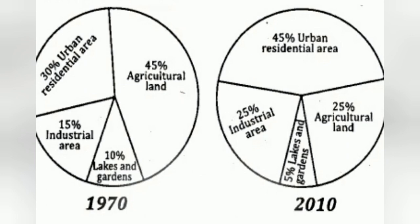This is a comparison chart. Just observe the charts — 1970 and 2010, Bangalore land use. In 1970, 45% of the maximum land was used as agricultural land. But in 2010, 45% of that agricultural land became urban residential areas as the population increased. Agricultural land decreased while urban residential area rose to 45%.